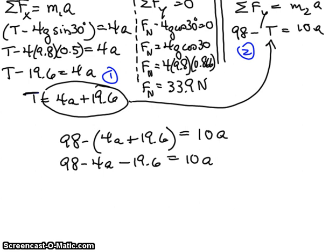So this is going to be 98 minus 4a minus 19.6 equals 10a. You can see that the accelerations are going to add. If I bring the acceleration, if I add 4a to both sides,